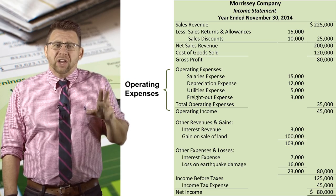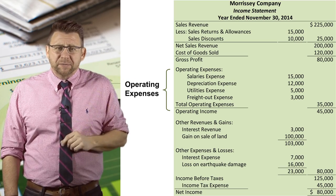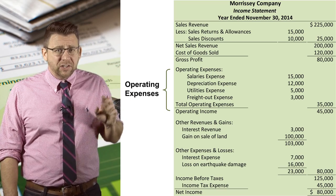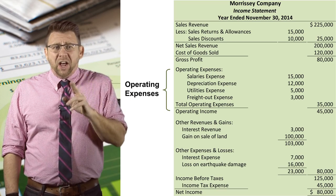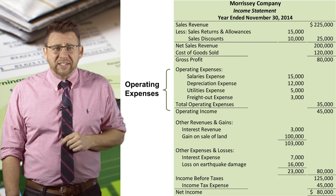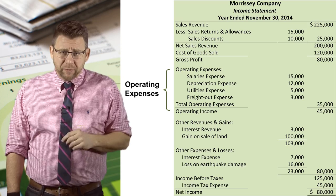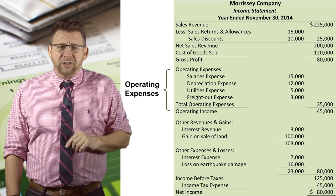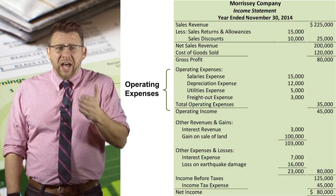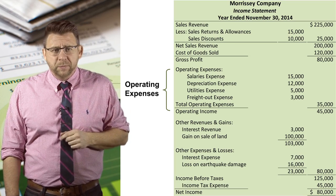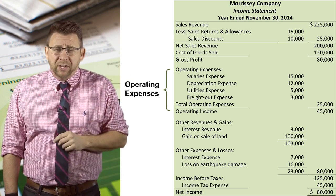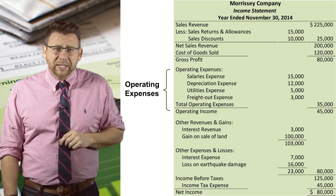The next section lists all of the operating expenses of a business. Not all expenses are listed here because not all expenses relate to operations. The most notable expense that doesn't belong in this section is interest expense, because interest expense relates to how a business finances its operations, not operates it. Operating expenses are deducted from gross profit to arrive at operating income.